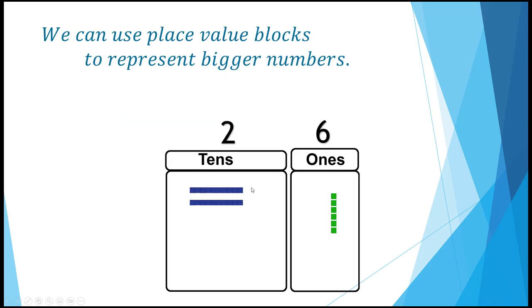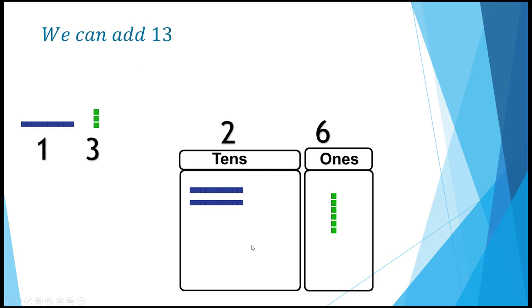We can use place value blocks to represent bigger numbers. This is what 26 would look like. We can add 13. We can count 20 plus 10 is 30. We had 6, 7, 8, 9. So we have 39 of whatever these are now.